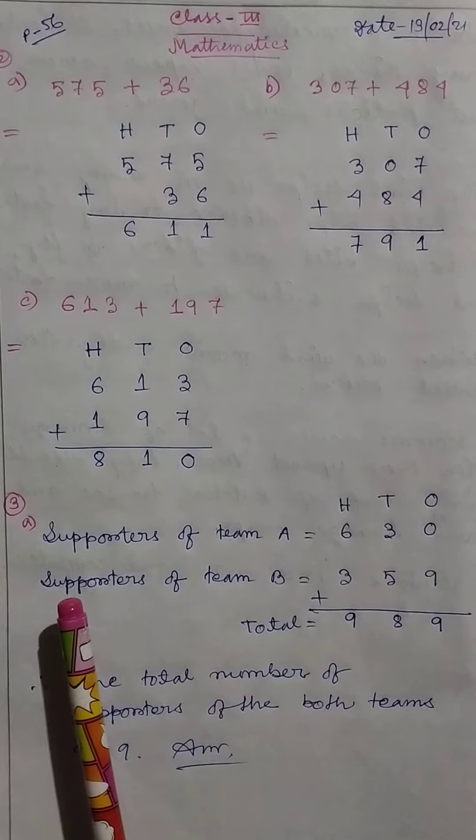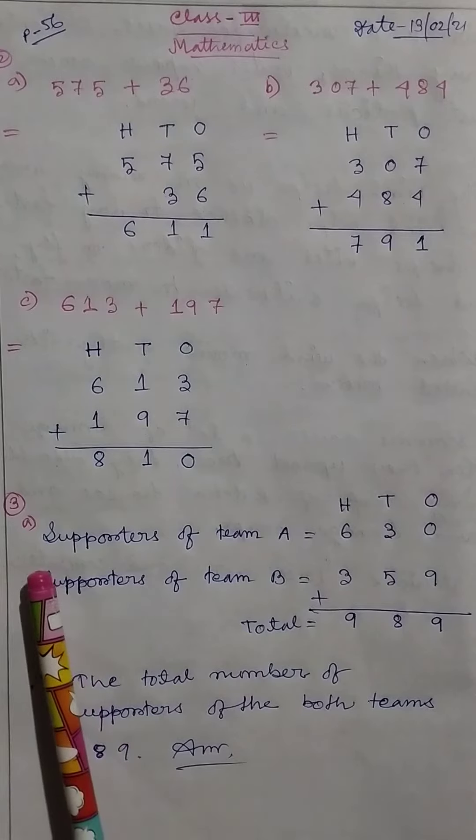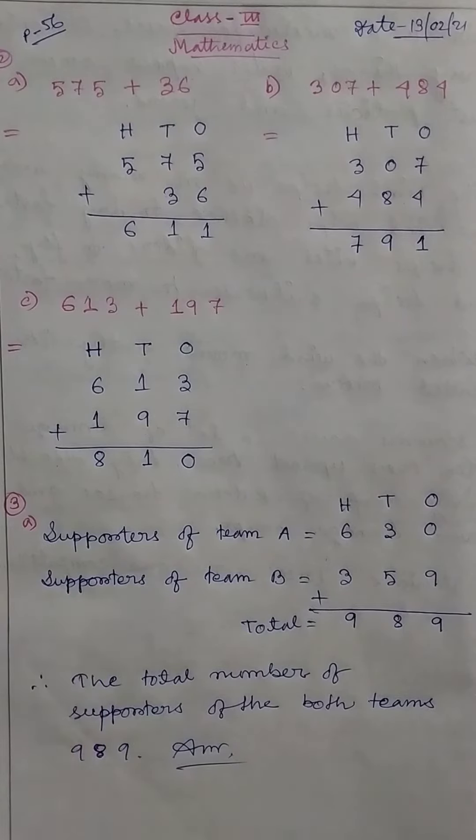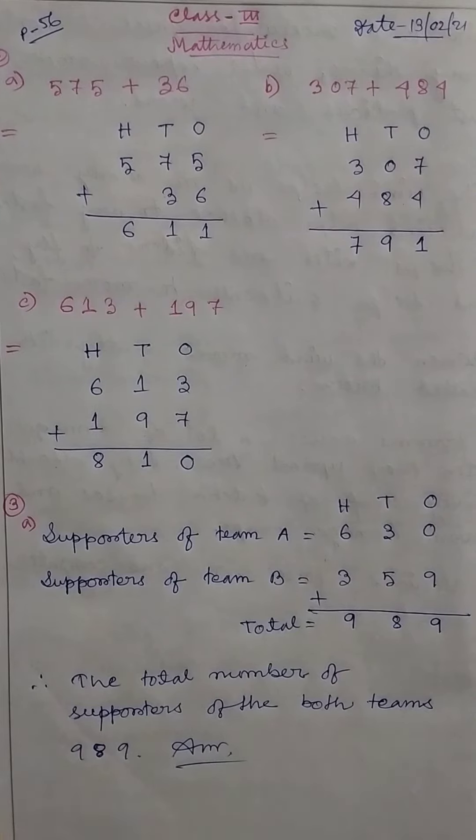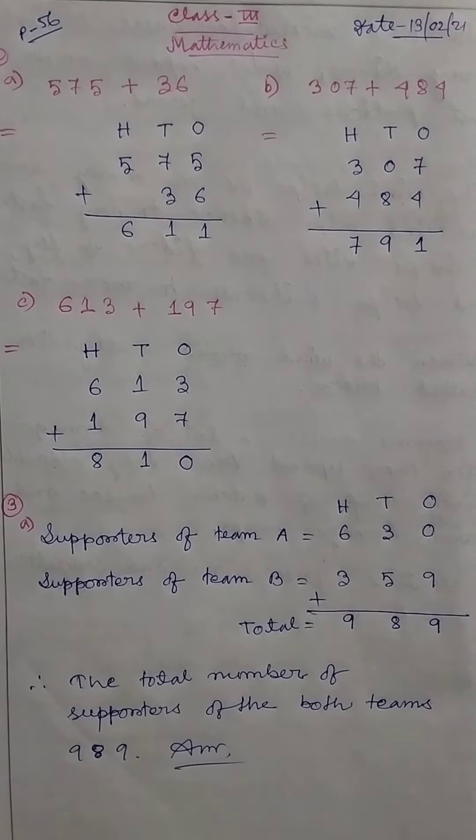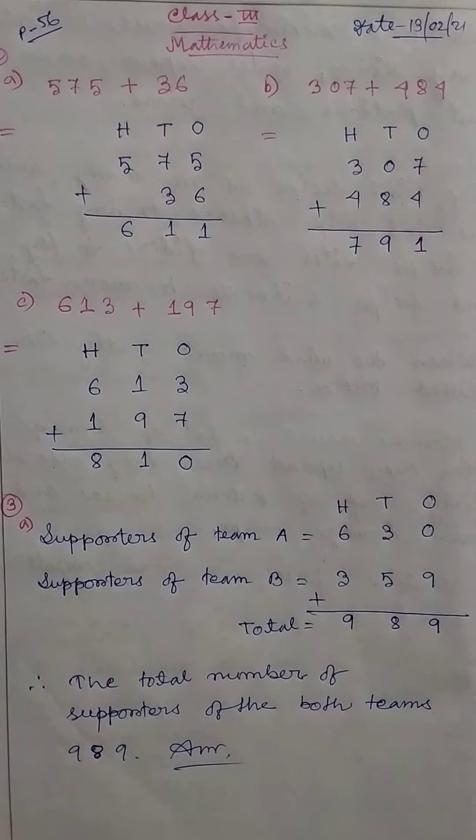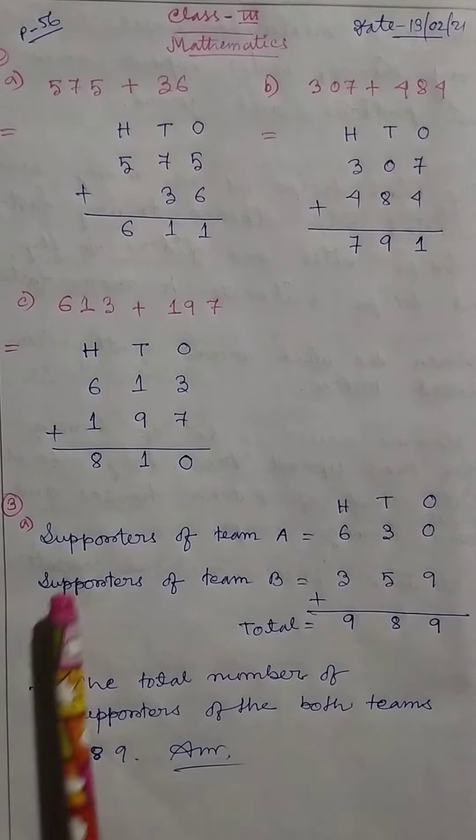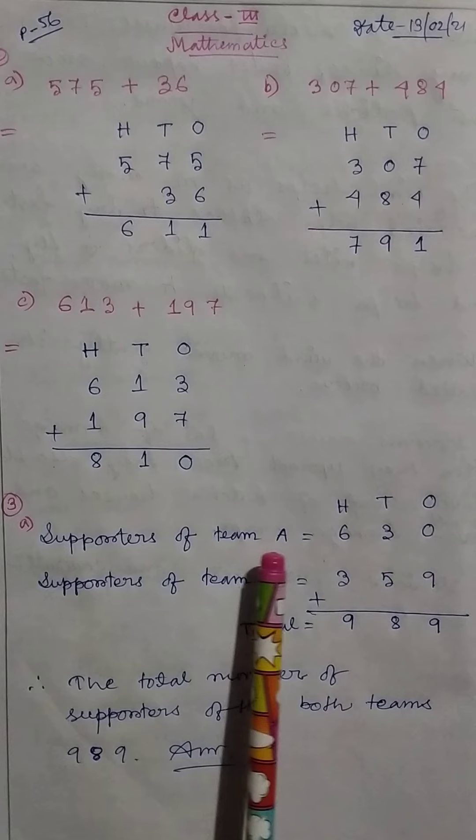Solve the following word problems. Problem A: In a hockey match there were 630 supporters of team A and 359 supporters of team B. Find the total number of supporters of both teams.